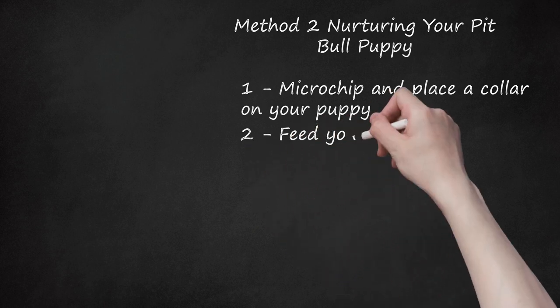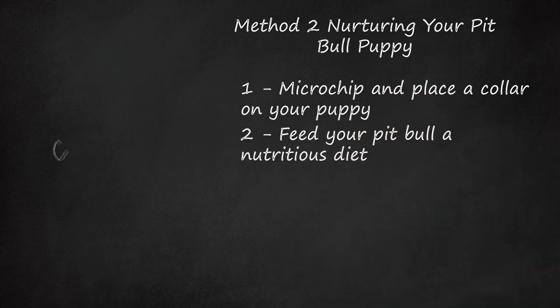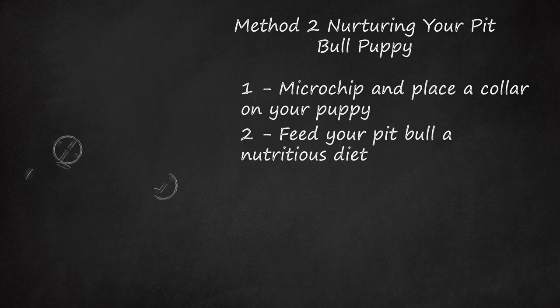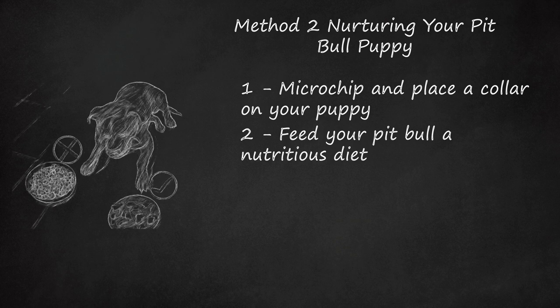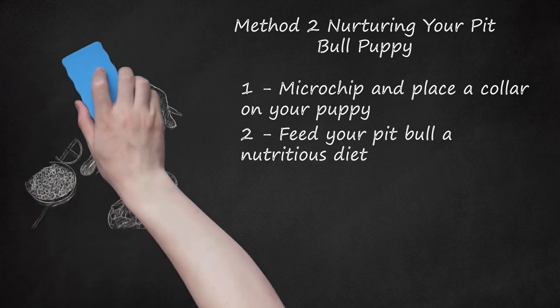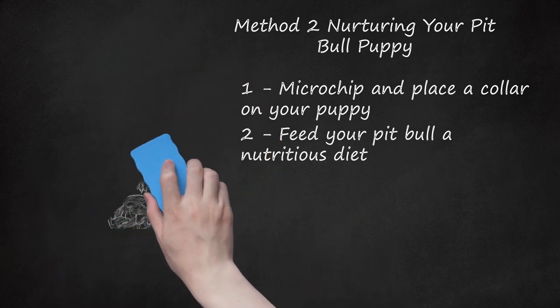Feed your pit bull a nutritious diet. Talk with your veterinarian about choosing a high-quality food for your puppy. Avoid commercial foods that list low-quality ingredients like meat by-products and grains. Instead, choose one that immediately lists a meat. Offer your puppy several regular meals throughout the day, instead of constantly leaving a full dish of food out. Read the package or ask your vet about a specific amount of food to feed your puppy each day.